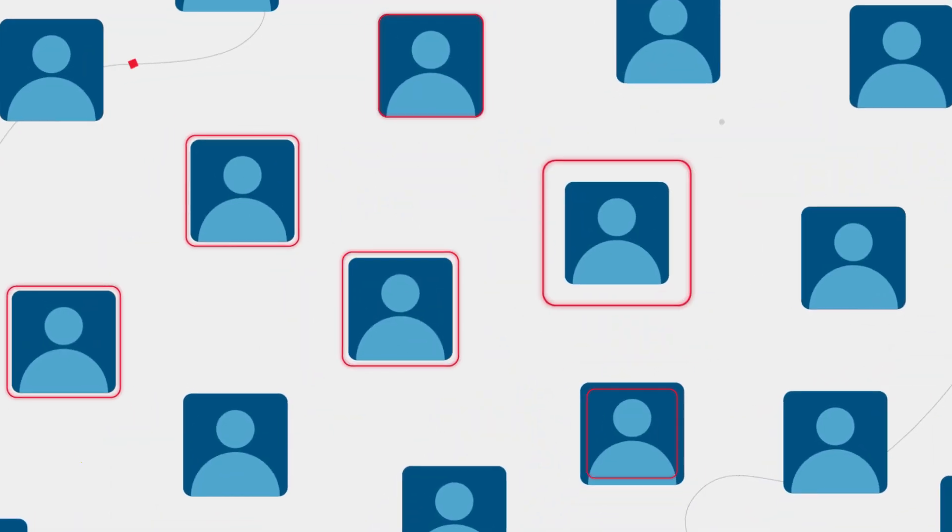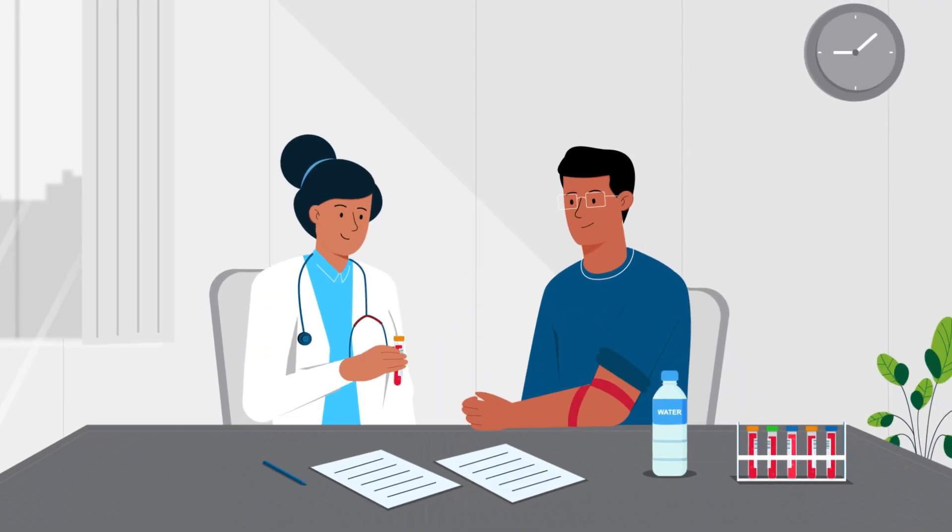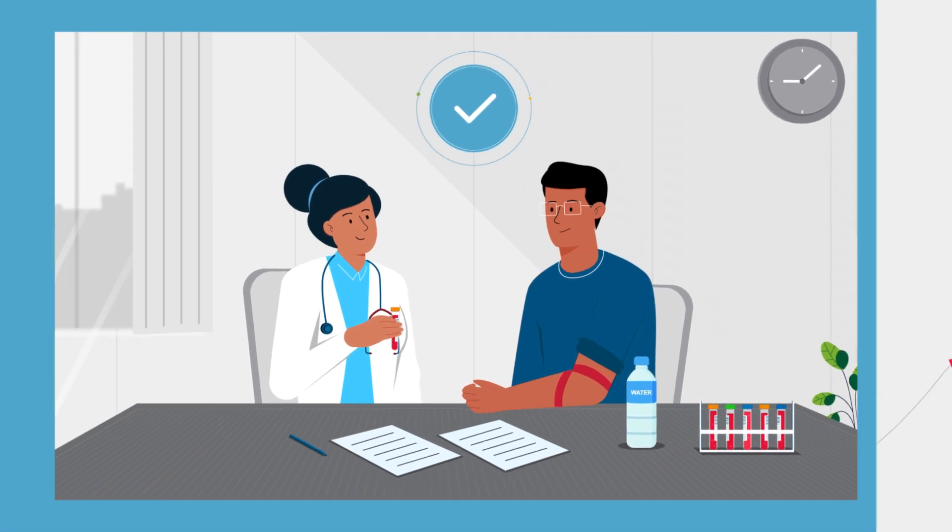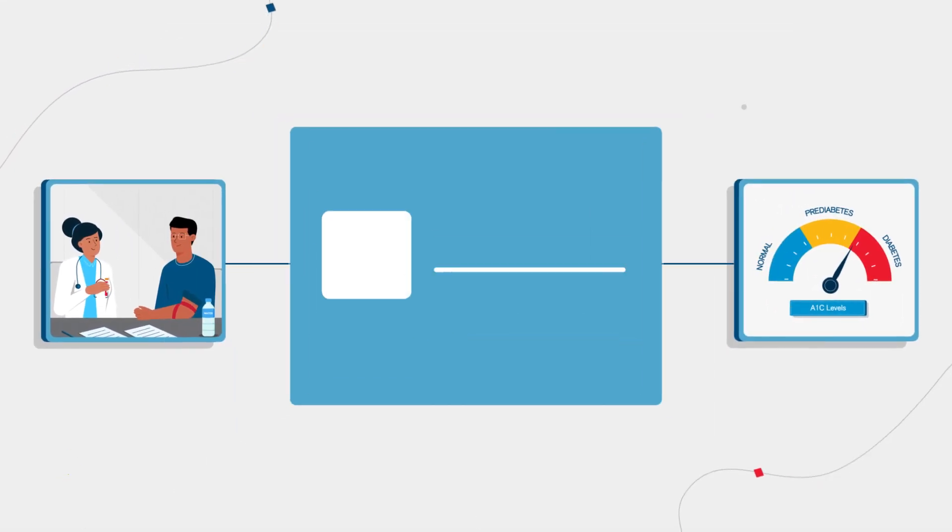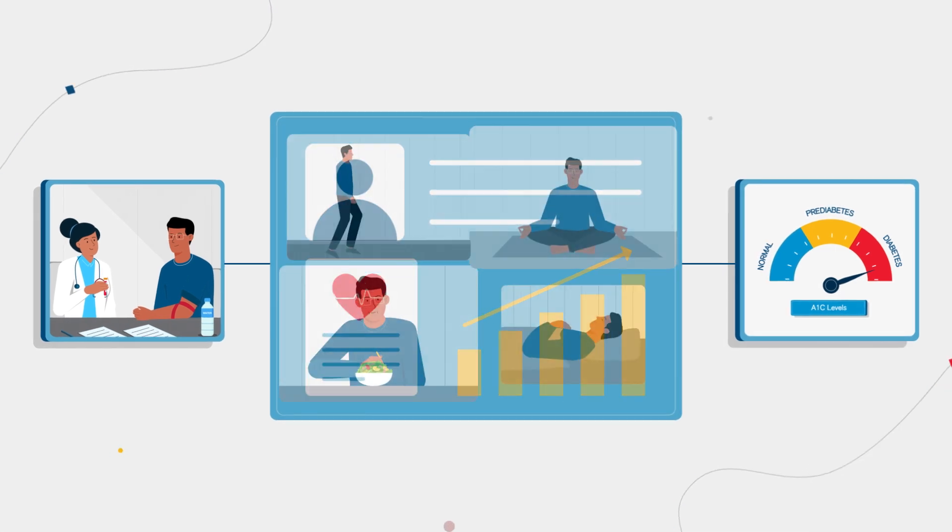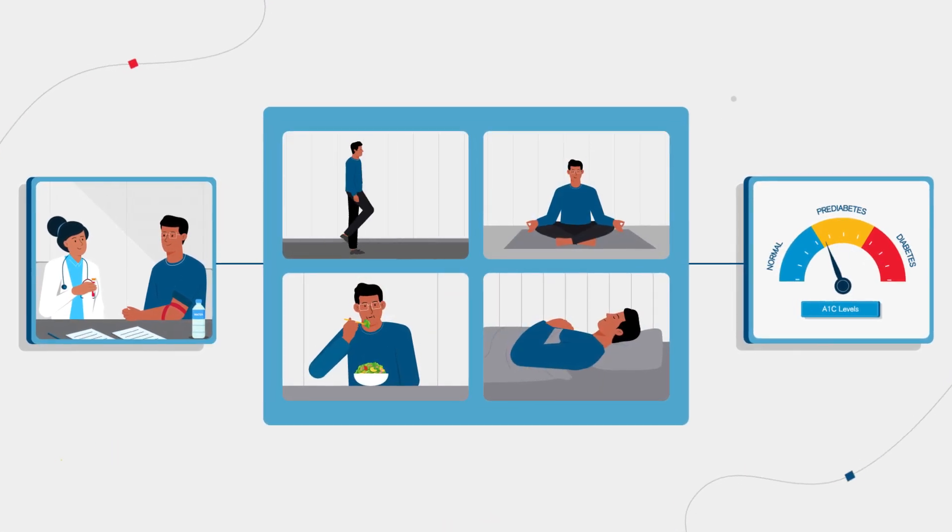But many people have no symptoms early on. That's why it's important to get tested. Common tests for diabetes, like the A1C test, can provide health insights and inform lifestyle changes that can reduce the likelihood of prediabetes or Type 2 diabetes.